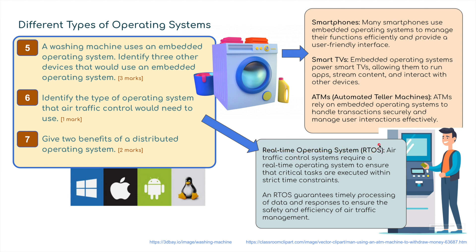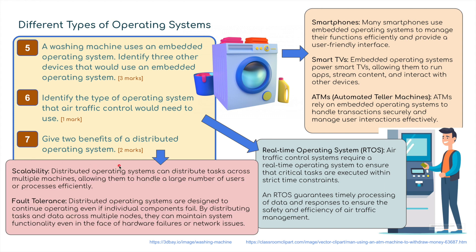For two marks, give two benefits of a distributed operating system. A distributed operating system allows for scalability - it can distribute tasks across multiple machines, allowing it to handle a large number of users or processors efficiently. It also supports fault tolerance, meaning it is designed to continue operating even if individual components fail. By distributing tasks and data across multiple nodes, it can maintain system functionality even in the face of hardware failure or network issues - if one machine goes down, tasks can be bounced to other nodes.